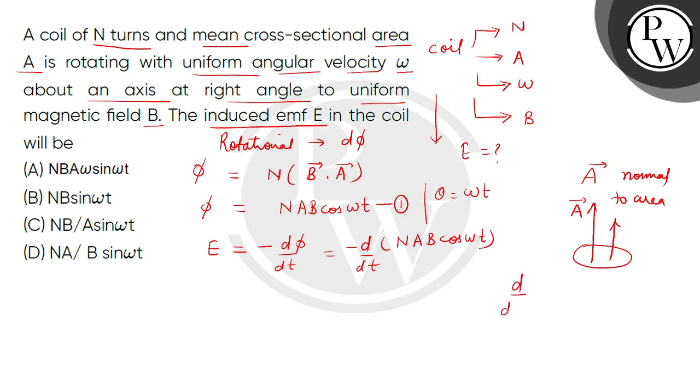Now, the derivative of cos(a·x) is minus a·sin(a·x). So E equals, with N·A·B constant, minus N·A·B·omega multiplied by minus sin(omega·t).